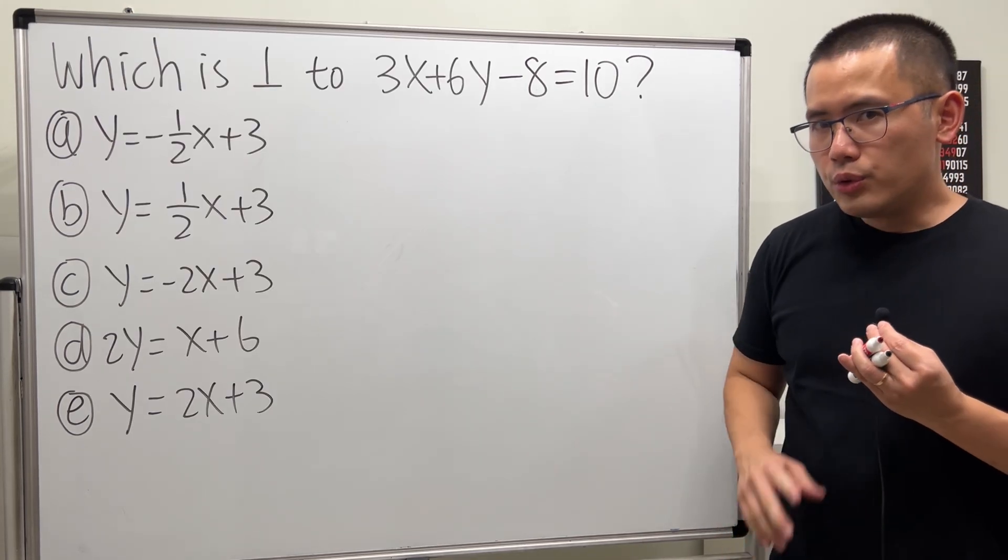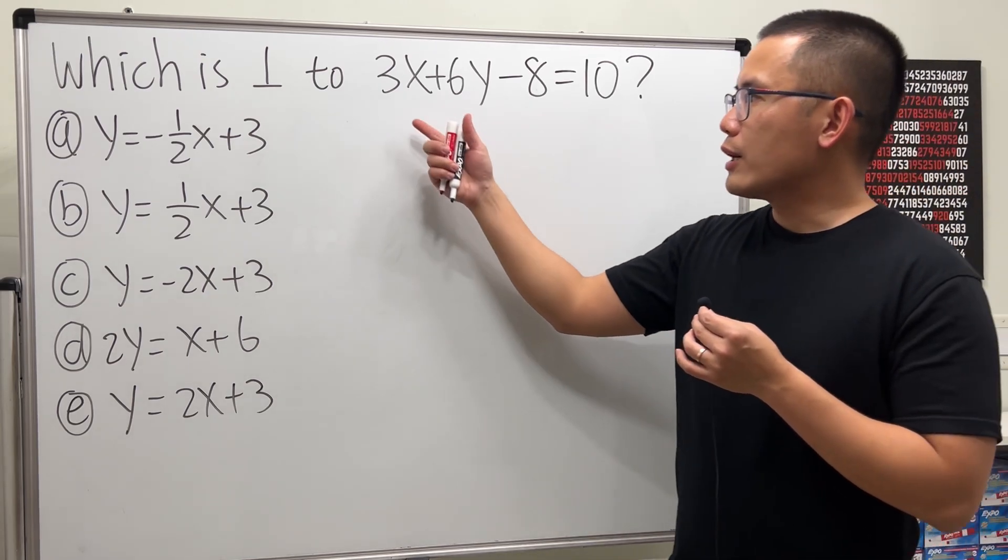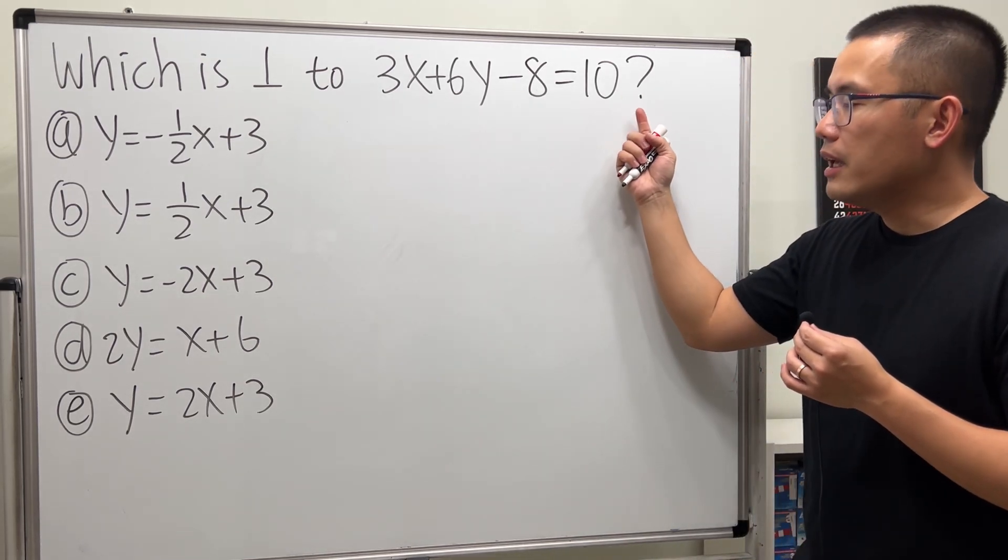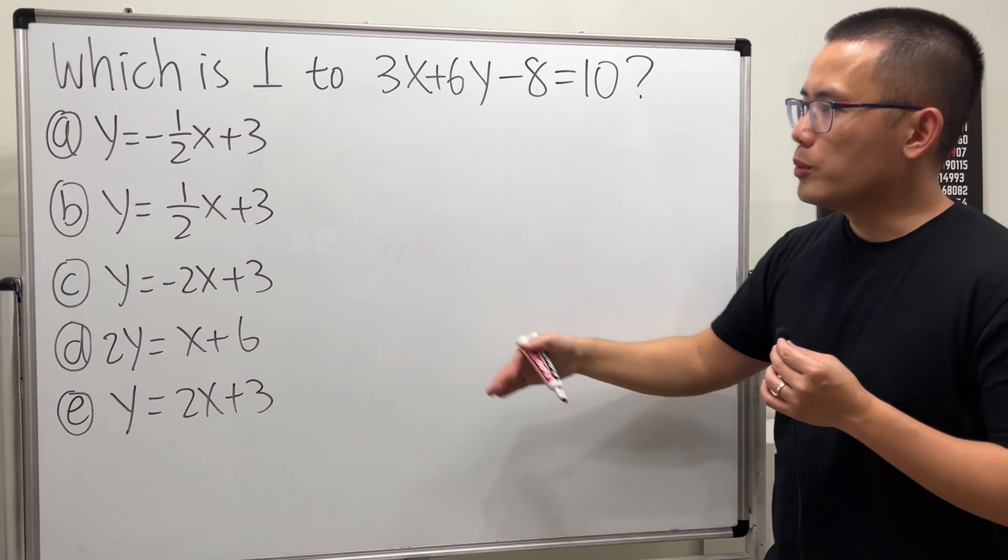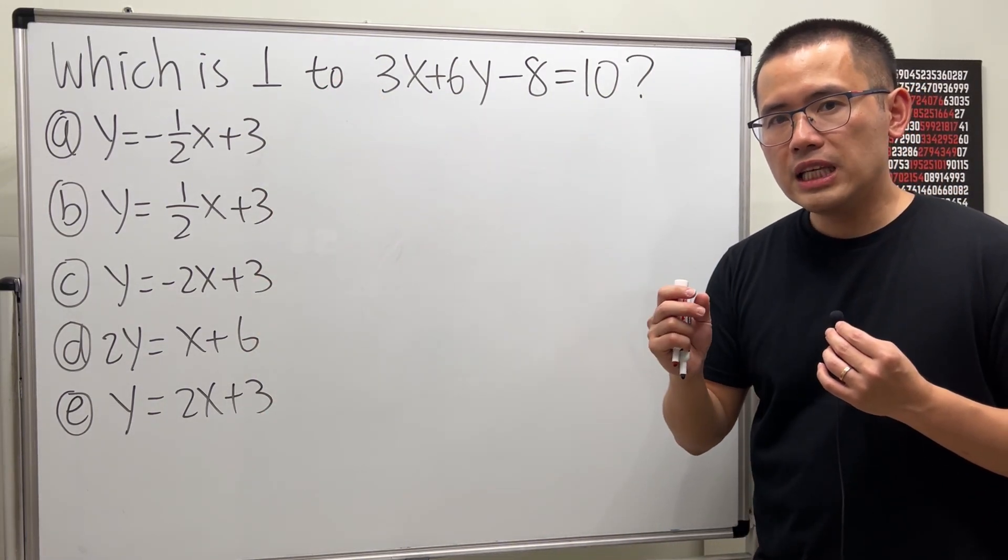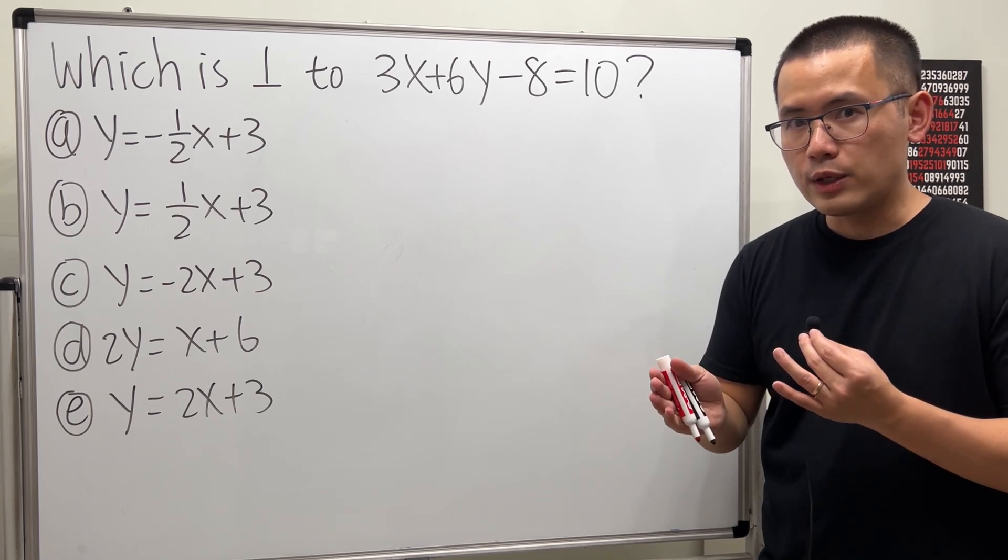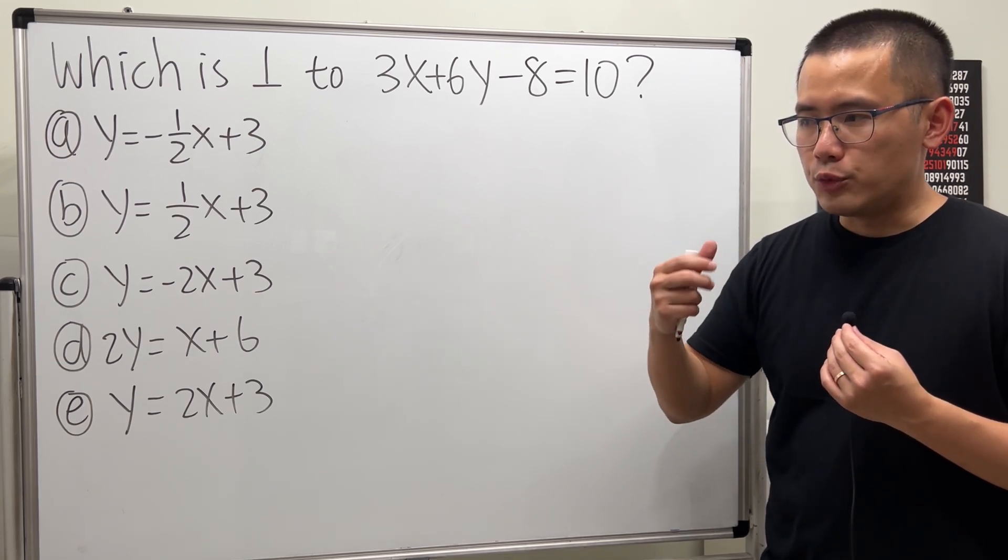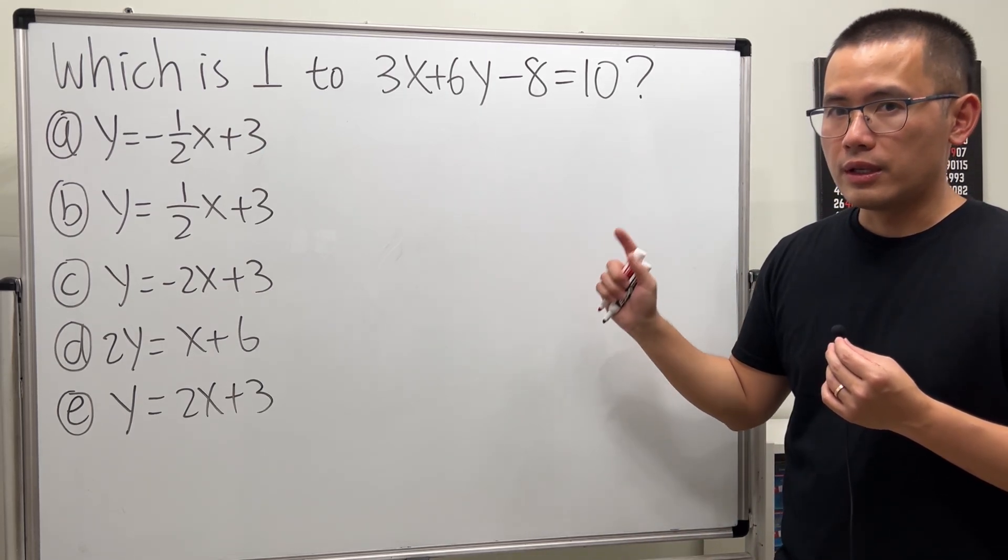Okay, the key to do this question is we are going to find the slope of the given line and compare that with the slope of these lines here. If the slopes are negative reciprocals, or in another word, opposite sign and reciprocal, then we know the lines are perpendicular.